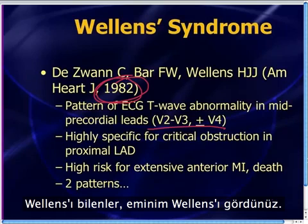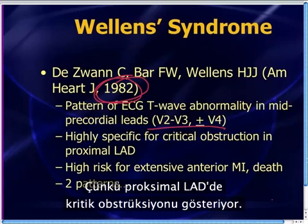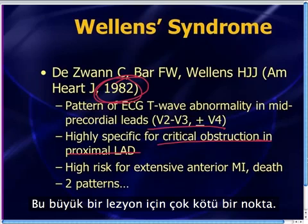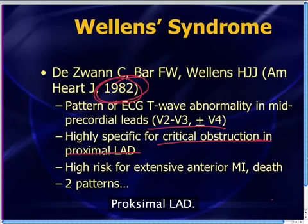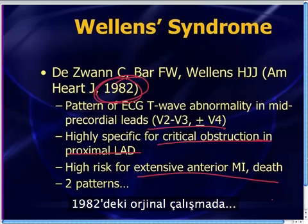For anyone who knows about Wellens, you've seen it a few times a year. It's very important because it predicts a critical obstruction in the proximal LAD. That's a terrible place to have a big lesion. And no surprise — these patients are at high risk for having a big anterior MI or dying.